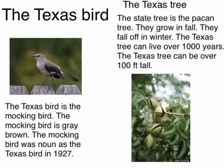The Texas Bird. The Texas Bird is the Mockingbird. The Mockingbird is gray and brown. The Mockingbird was known as the Texas Bird in 1927.